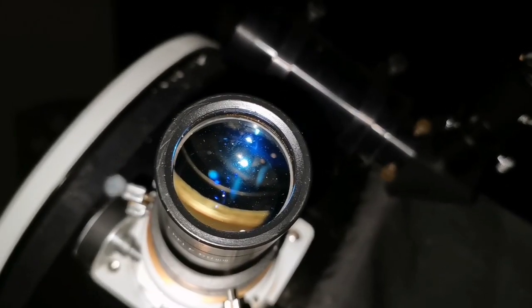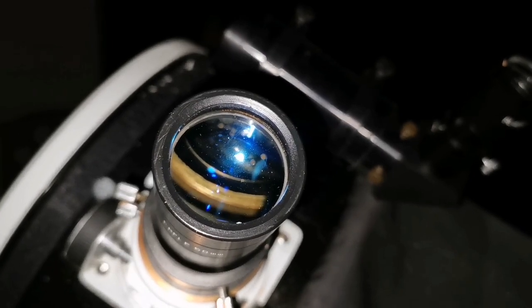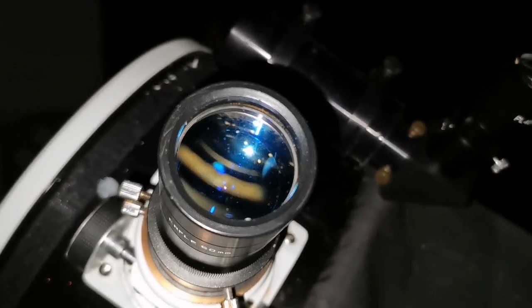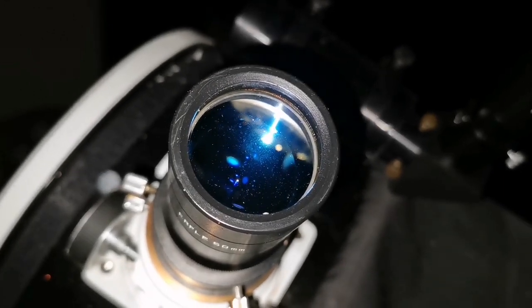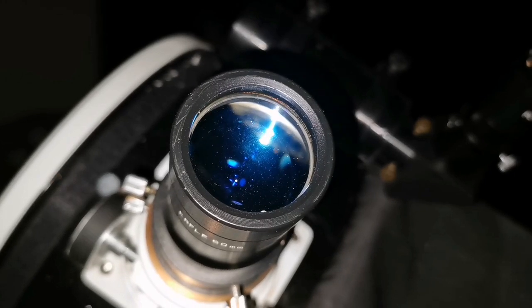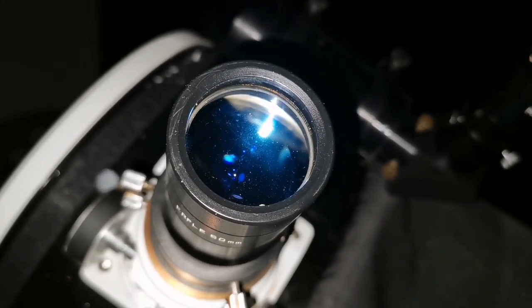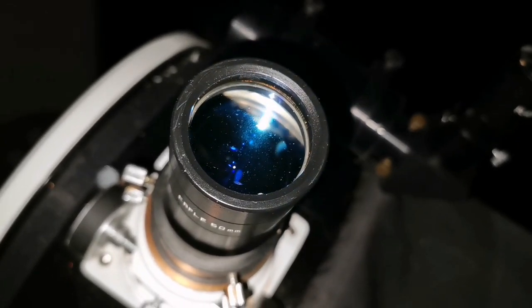This is my 12 inch or 305mm reflector telescope on a Dobsonian mount. This is a Sky Watcher FlexTube 300P and I'm using an Erfle eyepiece, Siberia 50mm Erfle eyepiece. This is a Russian one, very good, very lightweight, gives me a wide field of view, so I'm just using it with this telescope.